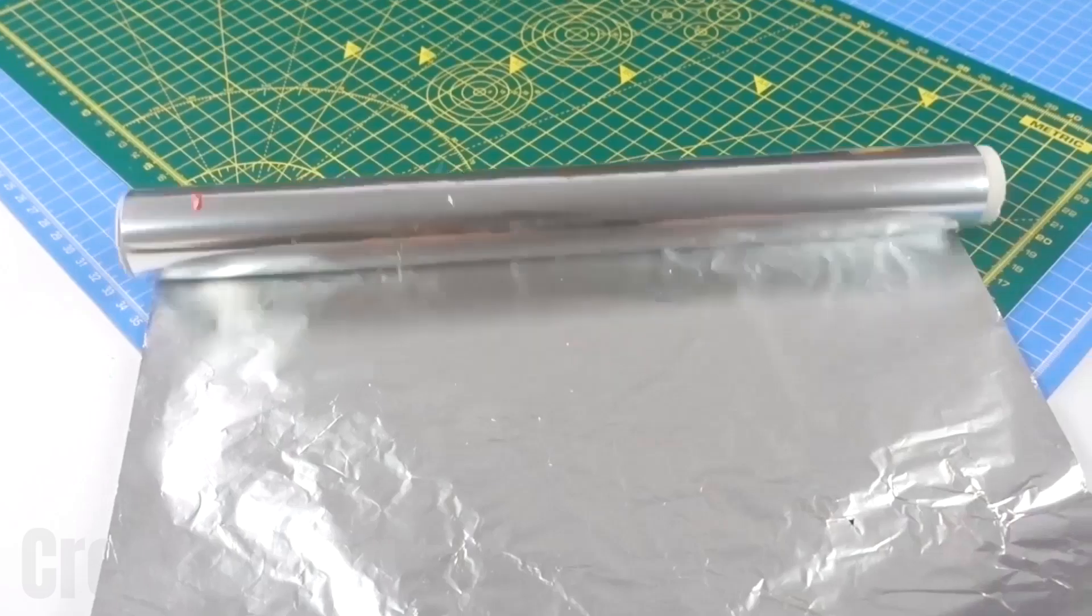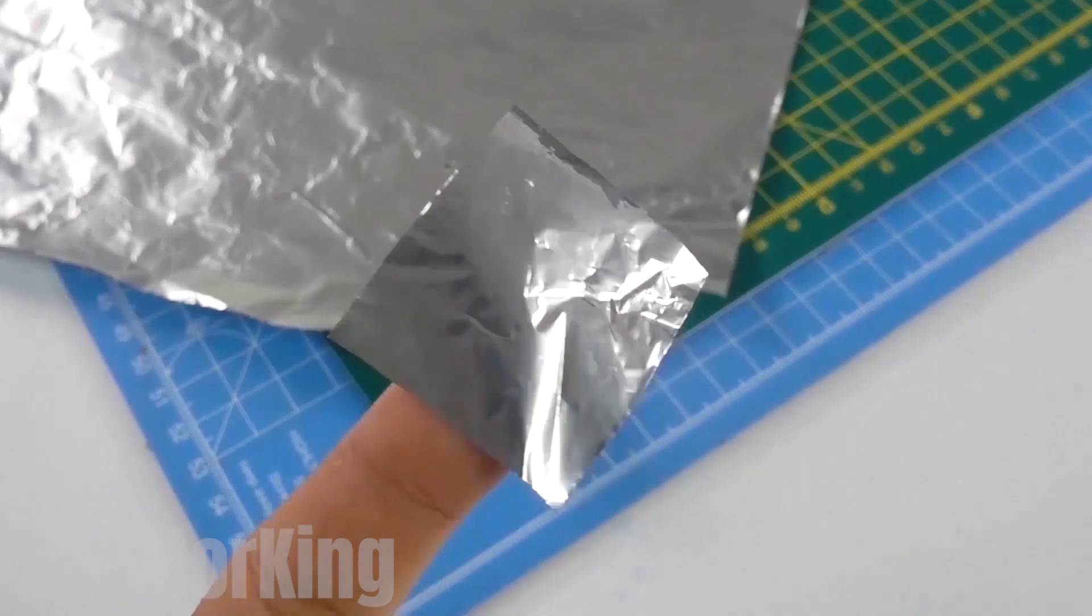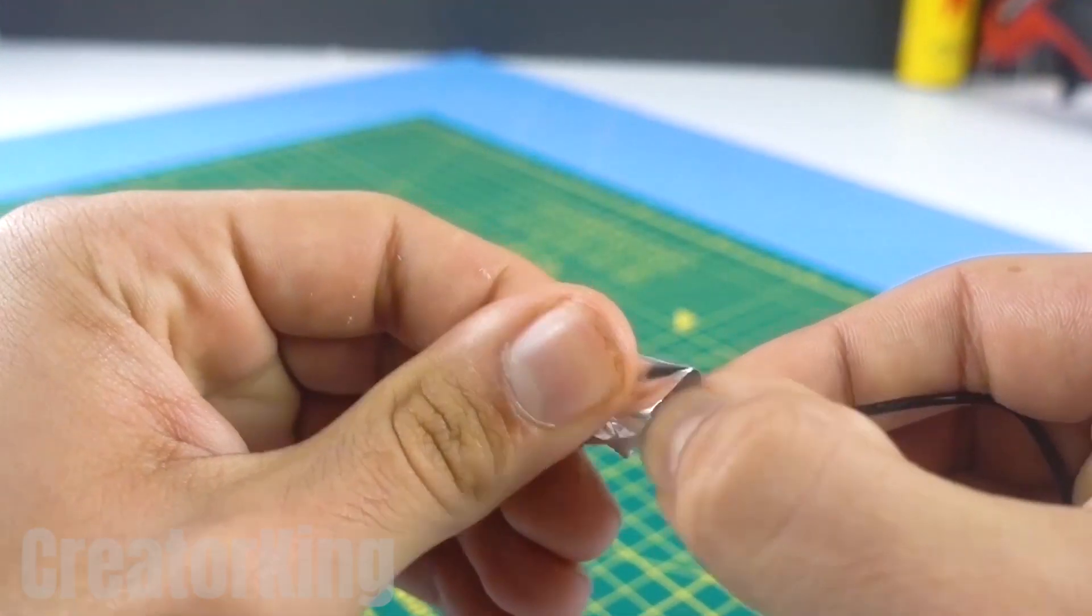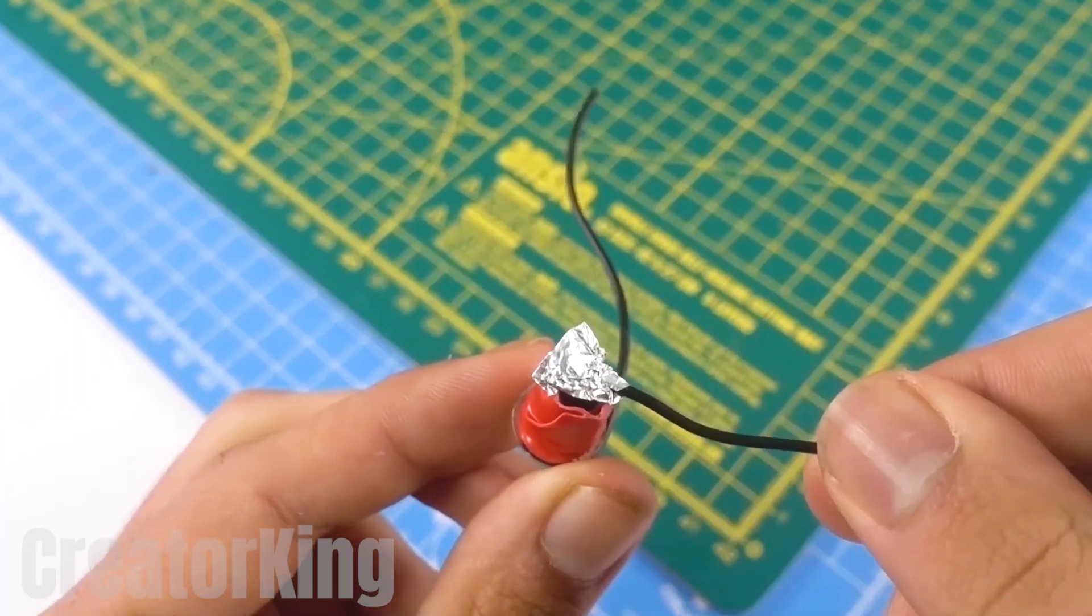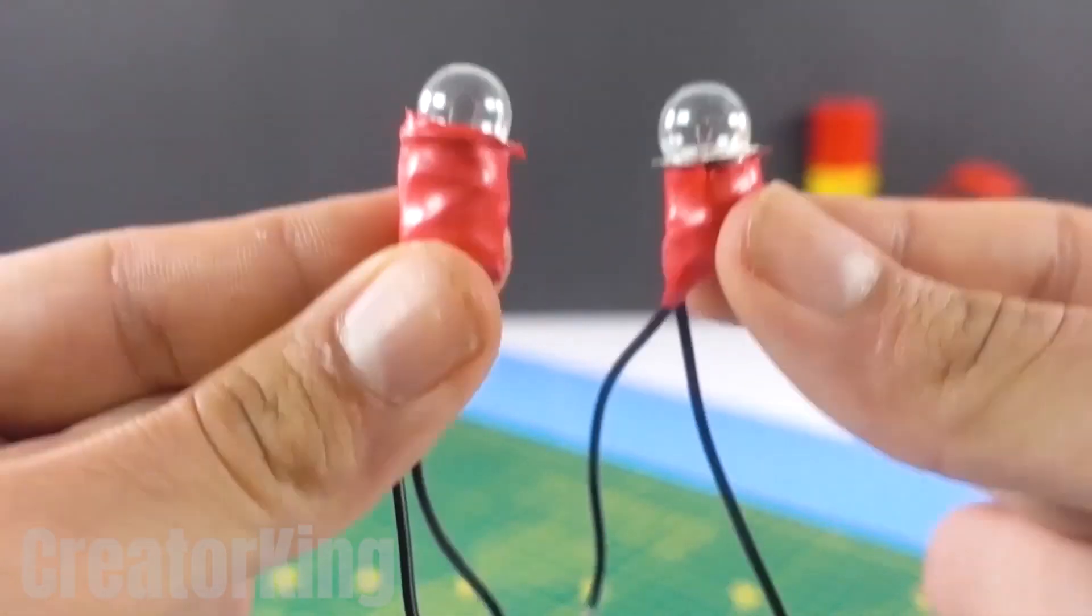Borrow the aluminum foil from the kitchen. We recommend doing it while your mom isn't there. After cutting an aluminum square, attach it to one end of another copper wire and crumple it until it has no shape. Once both wires are attached to the bulb, you already know the next steps we're going to take.